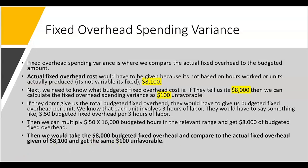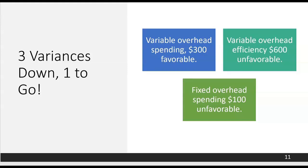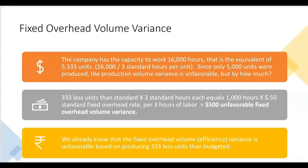The fixed overhead spending variance is $100 unfavorable. Here's where we stand: variable overhead spending was $300 favorable, variable overhead efficiency was $600 unfavorable, and fixed overhead spending was $100 unfavorable. Putting the two unfavorables together gives $700, minus the $300 favorable, leaving a net overhead variance of $400 unfavorable with one variance to go. Now let's look at the fixed overhead volume variance — the company has capacity to work 16,000 hours.